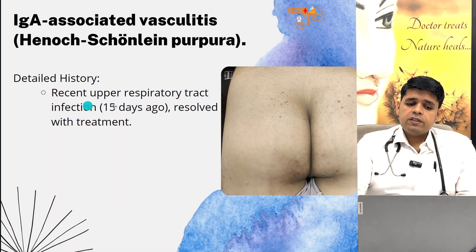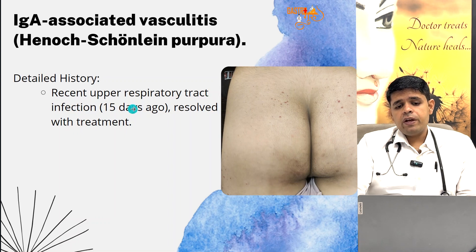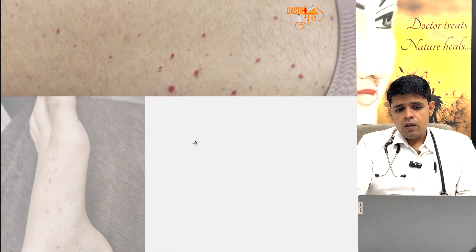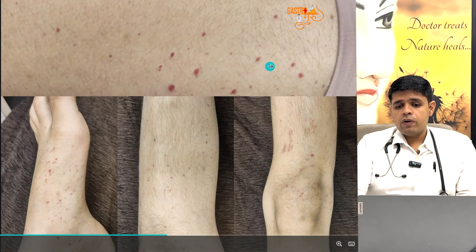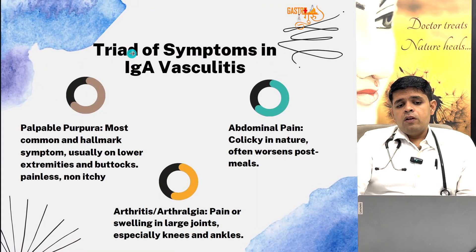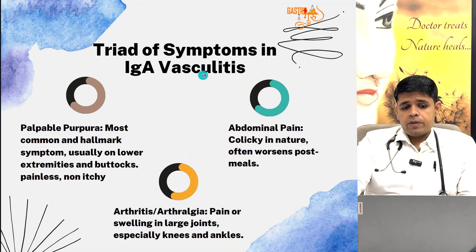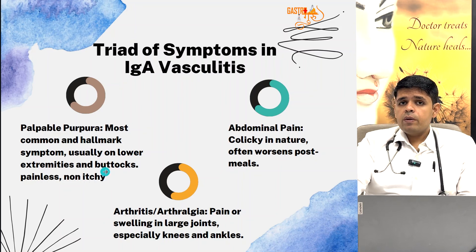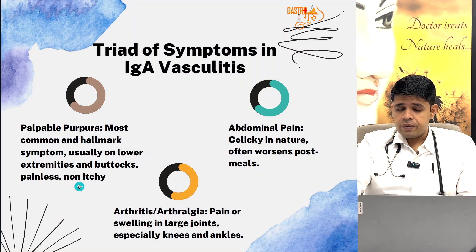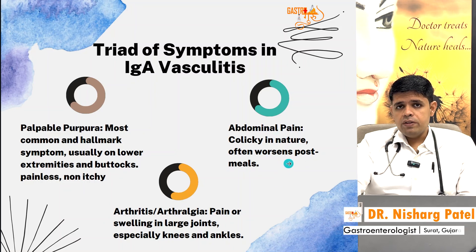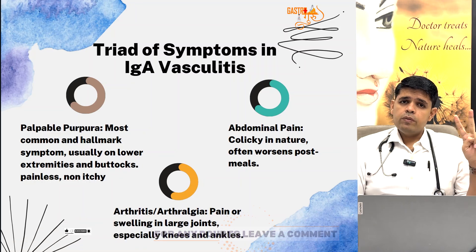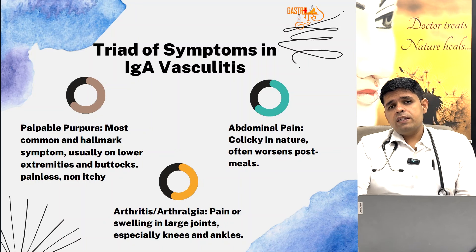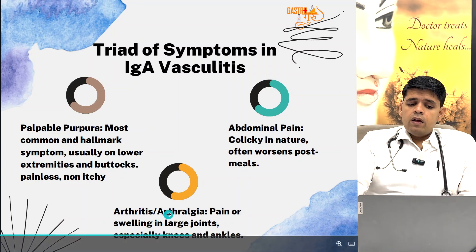The mother told me the child had an upper respiratory infection about 15 days earlier that resolved with treatment. These purpuric patches kept on increasing over a period of seven days. In IgA vasculitis or Henoch-Schönlein Purpura, there is a triad of symptoms: number one is palpable purpura — the most common hallmark — seen in the lower extremities and predominantly on the buttocks; it is painless and does not cause itching. There is abdominal pain which is colicky and increases post meals because it is a vasculitis and a mucosal pathology.